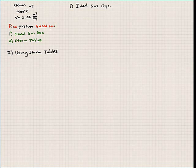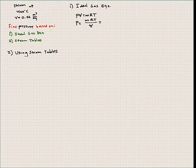The ideal gas equation we know is PV = mRT. We're interested in solving for pressure, so pressure is equal to mRT over V. Since we have the specific volume of this mixture, we can simply write this as RT over V/m. The volume per unit mass gives us the specific volume, which we have.